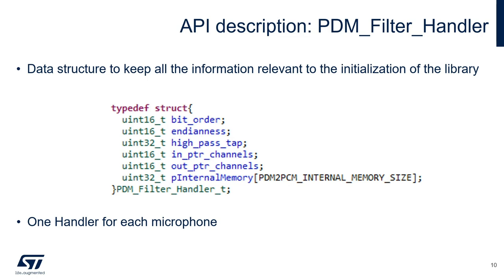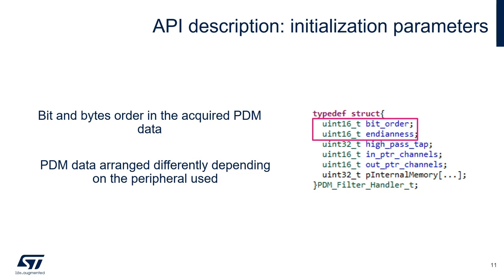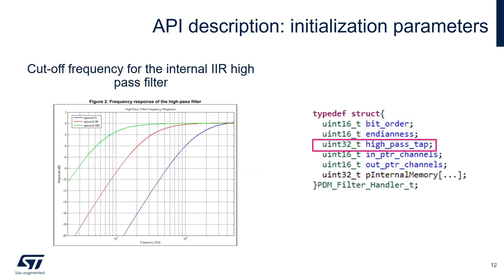Let's go deeper into the parameters themselves. Bit order and endianness describe the bit and bytes order in the acquired PDM data. Depending on the peripheral used for the acquisition, PDM data may be arranged differently in the PDM buffer. Instead of forcing the user to rearrange the data externally, the library can handle several scenarios internally. High pass tap parameter is used to tune the cutoff frequency of the high pass filter. Further information about the format of this value can be found in the reference manual.